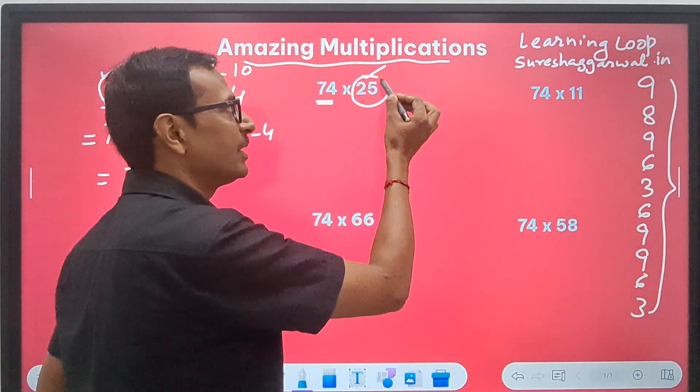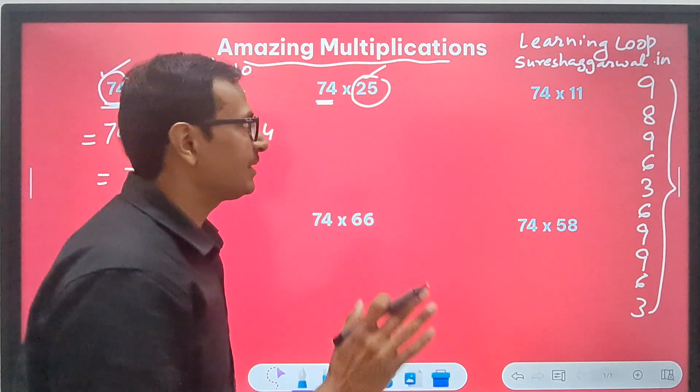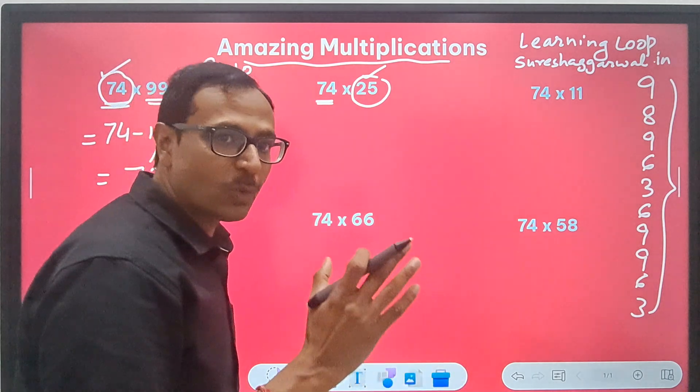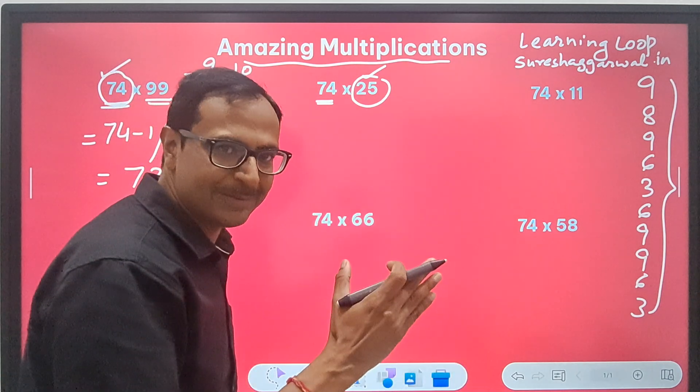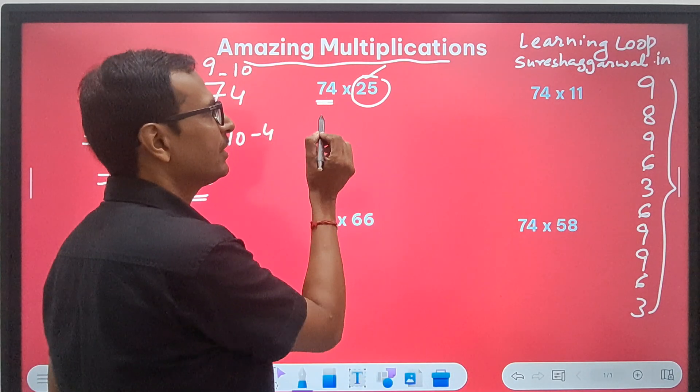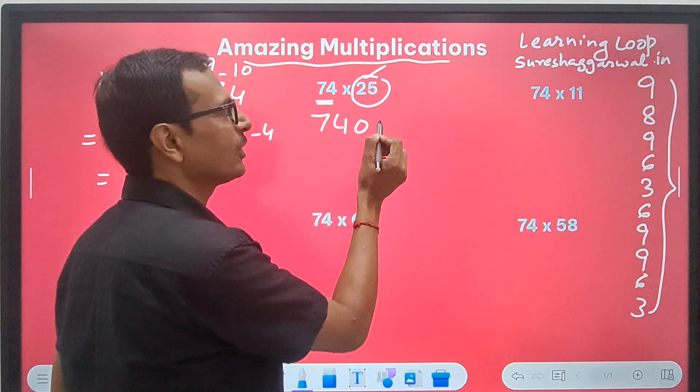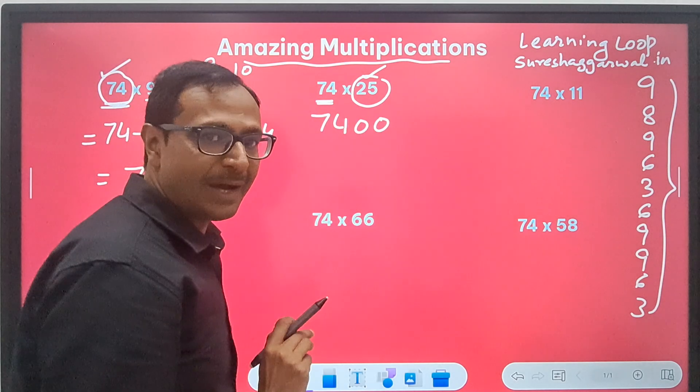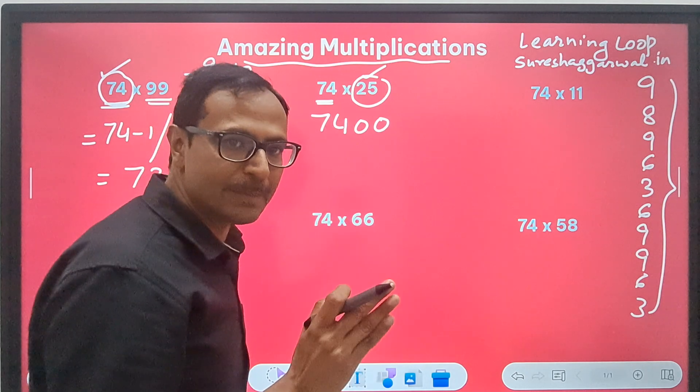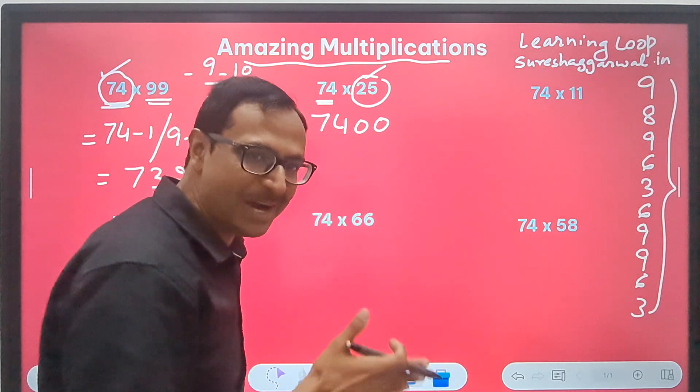When I see this number, the multiplier 25, I consider this as a quarter of 100. Multiplication by 100 is pretty easy. 7400, right? But I have to take one quarter also. And quarter means half of half.